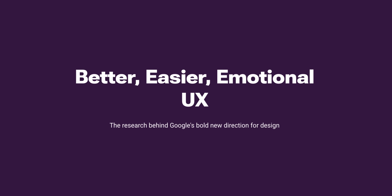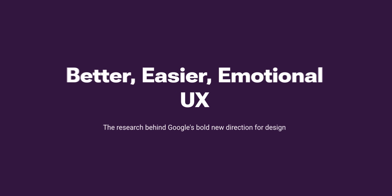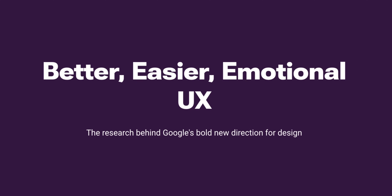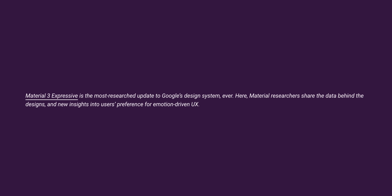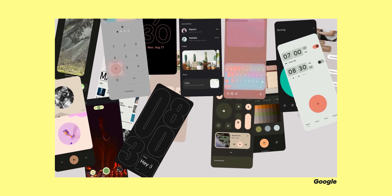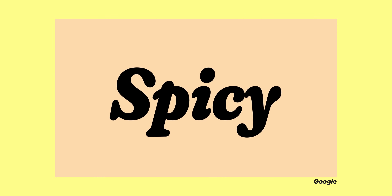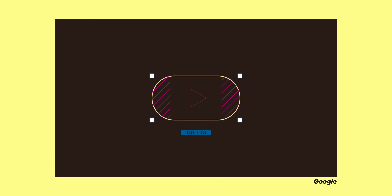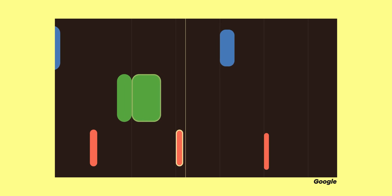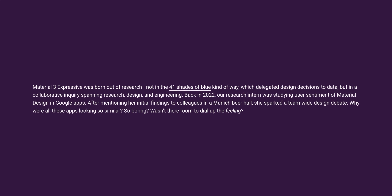Here's the deal with Material 3 Expressive: Google's calling it a bold new direction for design — their words, not mine. They go as far as to say it's the most researched update in their entire design system ever. This isn't technically a minor tweak; they're framing this as a massive overhaul, building upon the foundations laid with Material You.